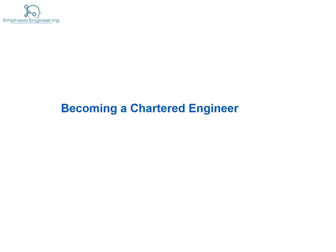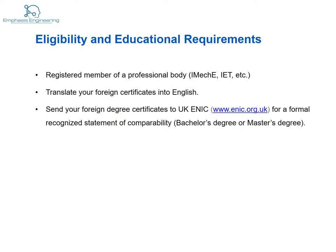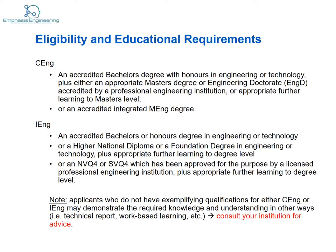We'll start by looking at the eligibility and educational requirements. First of all, you are expected to be registered with the professional body that concerns you and to be up to date with your payments. If your degrees are in a language other than English, you will need to have them translated into English and obtain a UK equivalent of your documents. If you plan to go through the CEng route, you are expected to have a master's degree, and if you plan to go the IEng route, you are expected to have at least a bachelor's degree.